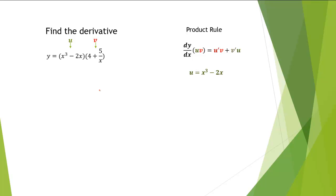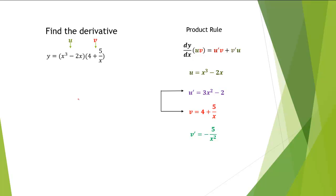Now we'll find the remaining elements in the product rule. We'll let u equal to x cubed minus 2x. From u, we can find u prime, and u prime is 3x squared minus 2. We're given v as 4 plus 5 over x. From v, we can find v prime as negative 5 over x squared.